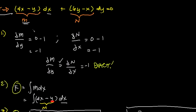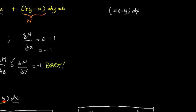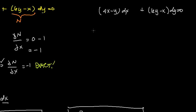Let me rewrite the whole thing. So we have (4x - y)dx + (6y - x)dy = 0. So if we interchange the rule of x and y, then we have: